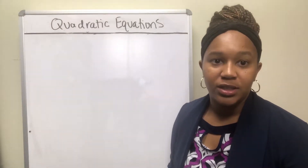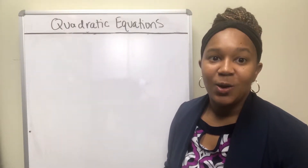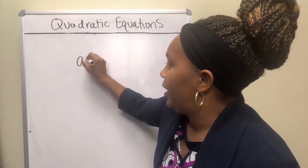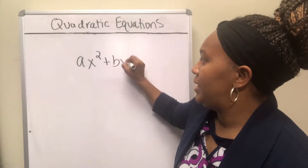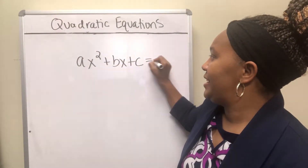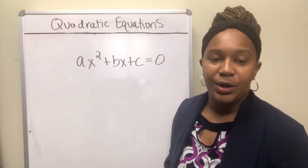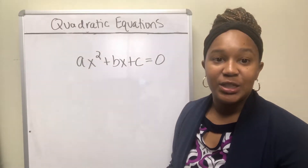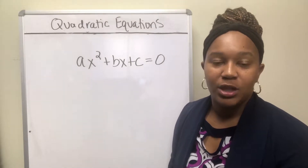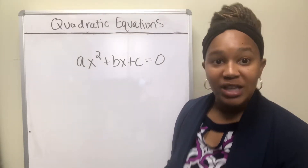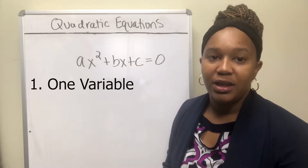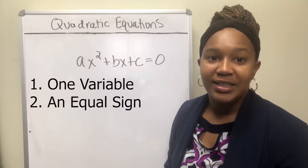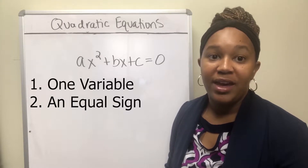Just exactly what is a quadratic equation — that's what we're about to talk about. A quadratic equation is an equation of the form ax squared plus bx plus c equal to zero. There are three things you want to look for to determine if it's a quadratic equation: there has to be one variable only, there has to be an equal sign, and the highest exponent on the variable has to be two.